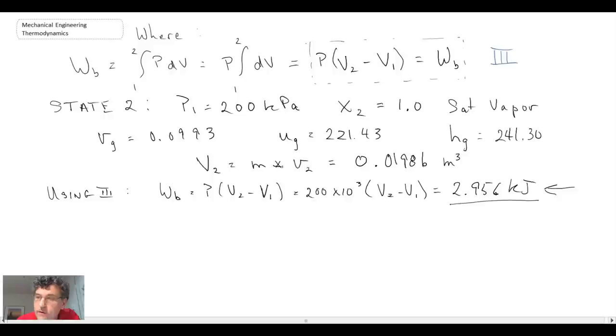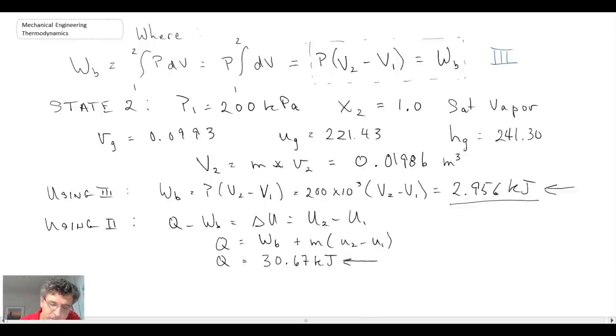Now we move into the third part, which is calculating the total heat transfer. We're going to use both approaches: the one with enthalpy as well as the one using internal energy. If all goes well, we should get the same answer for both techniques. We're going to use equation two to begin with. The first approach gives us 30.67.